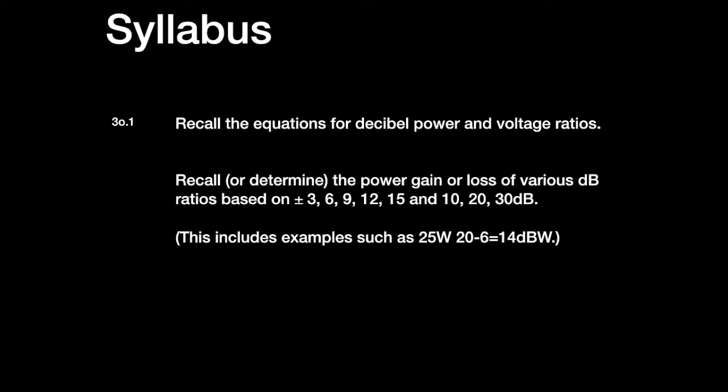So in a way, I think here they're giving us a bit of choice, and they're limiting the scope of the decibel ratios that they're going to ask us to 3, 6, 9, 12, 15, 10, 20, and 30. But we've got to remember that since decibels are always added or subtracted, then we need to make up intermediate values. And they've given an example of this in the last line there, where they've used 20 minus 6.